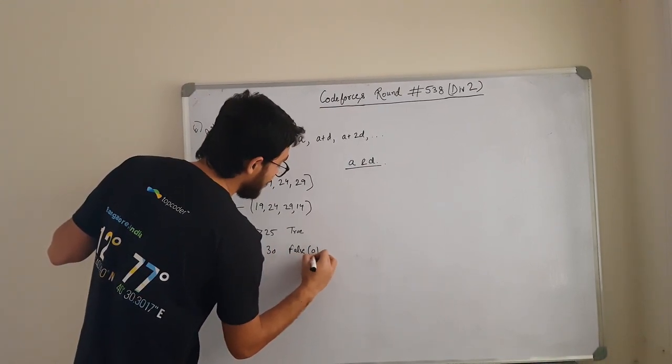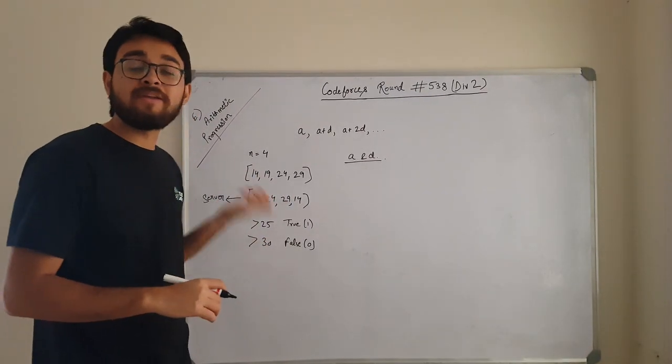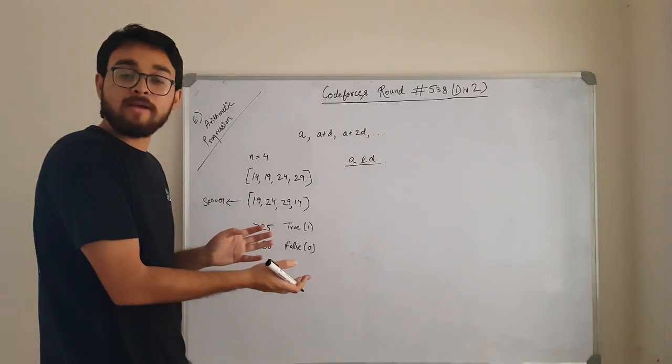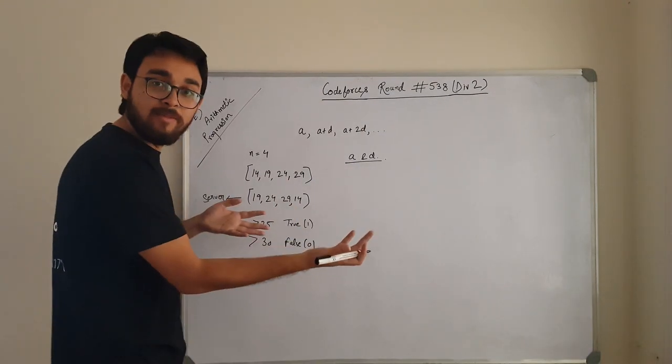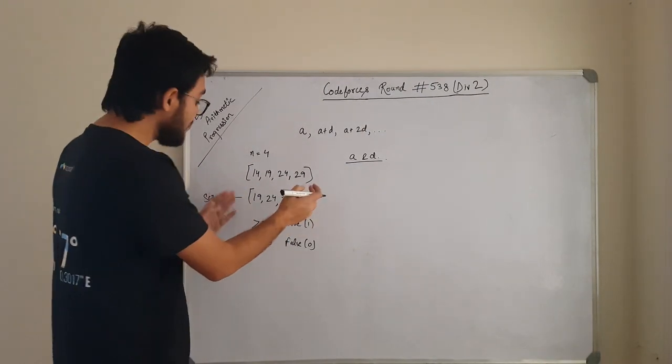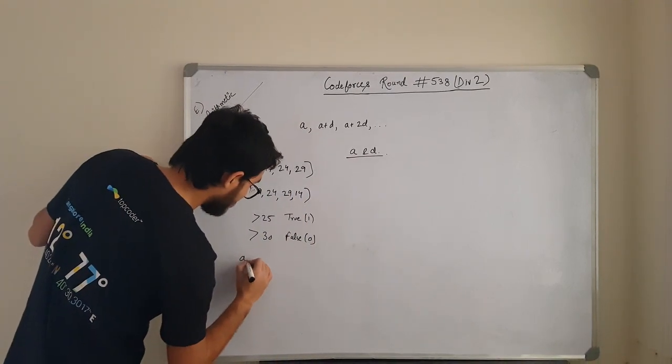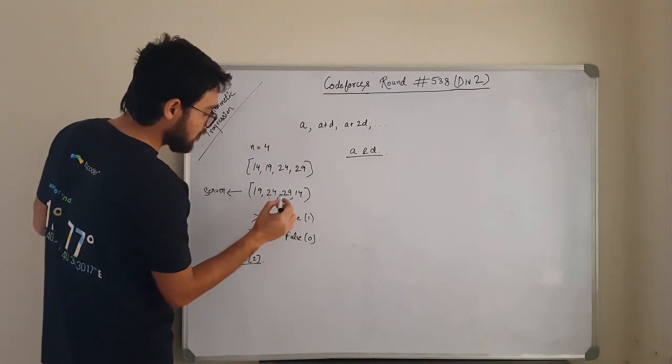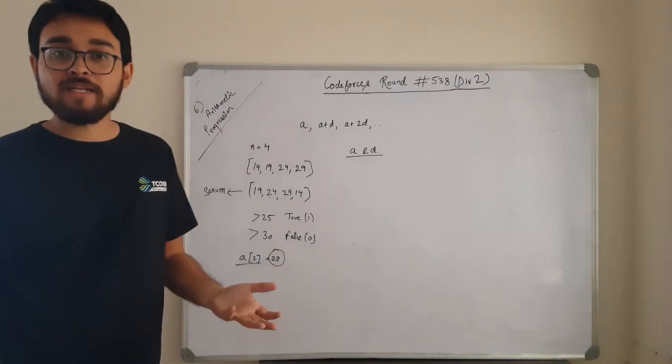In this array there is no element greater than 30, but there is an element greater than 25. This is the first type of query that you can make. Another type of query that you can make is give me the ith element of this array. This array is already the shuffled form. So if you make the query like give me a 2, it will return 0, 1, 2, it will give you 29.